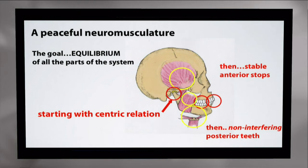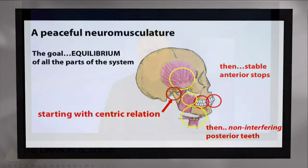It's predictable. We know this from numerous EMG studies. We can show how muscle hyperactivity results from occlusal interferences, and we can take away those interferences and show how quickly the muscles settle down to a peaceful neuromusculature. This is the end result we want for everything we do within occlusion.